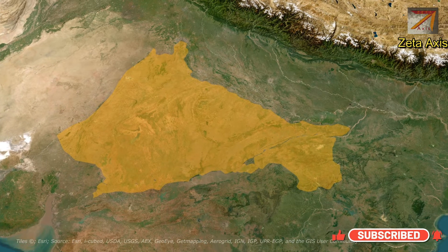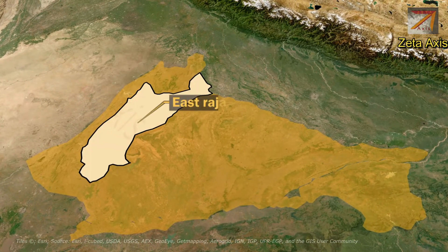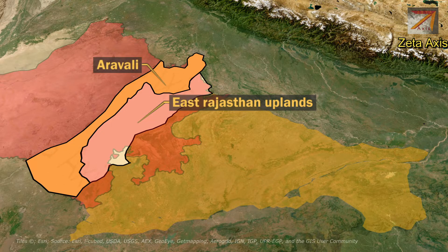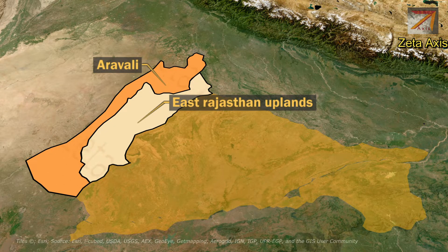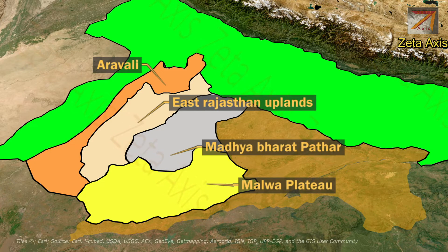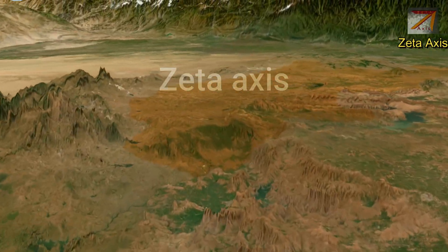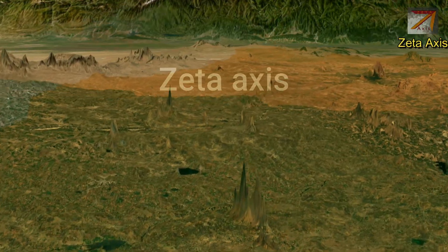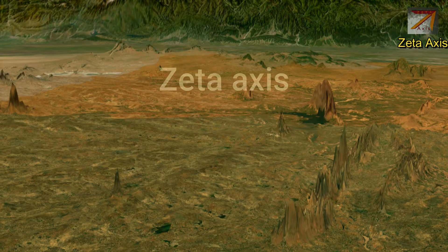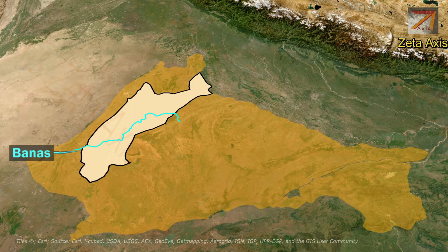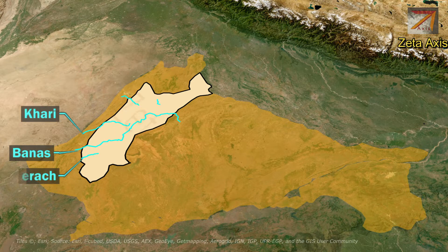The first Plateau we are going to discuss today as a part of Central Highlands is East Rajasthan Uplands. The East Rajasthan Uplands are located in southeastern Rajasthan, to the east of Aravli Hills. They are bounded by Aravli in the west, Ganga Plains in the north, Madhya Bharat Plateau in the east, and Malwa Plateau in the south. Average elevation ranges from 250 meters in the northeast to 495 meters in the southwest. The uplands are drained by Banas River, originating in Aravlis, along with tributaries like Kharri and Berach.